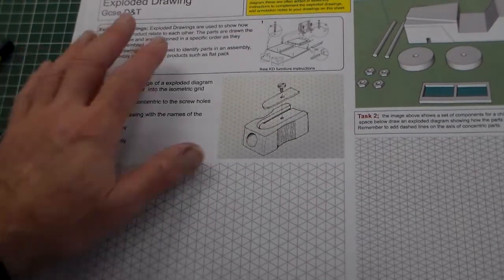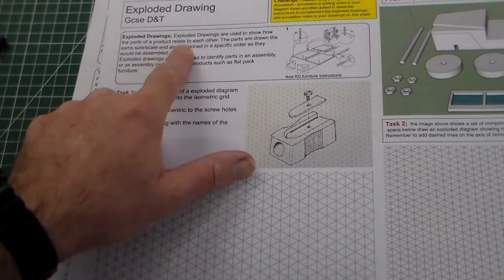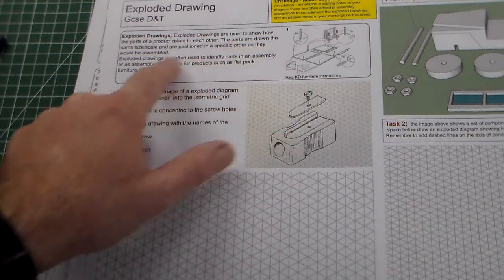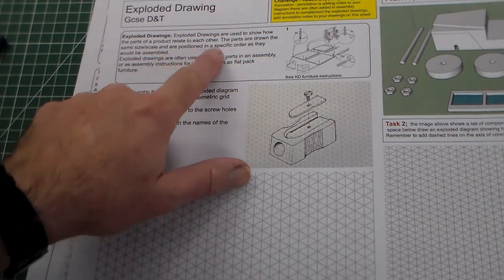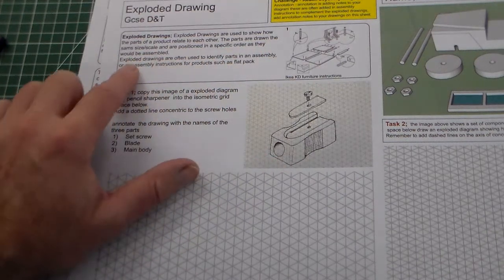Exploded drawings are used to show how the parts of a product relate to each other. These parts are drawn in the same size and scale and are positioned in a specific order as they would be assembled.